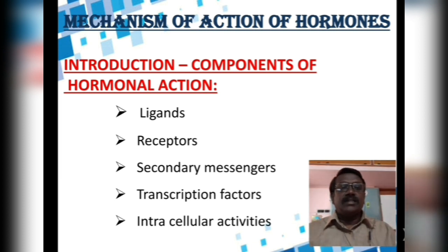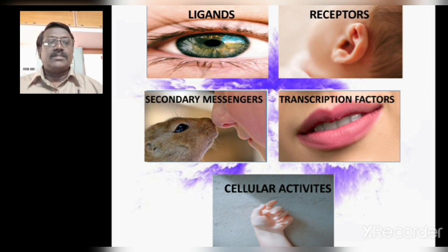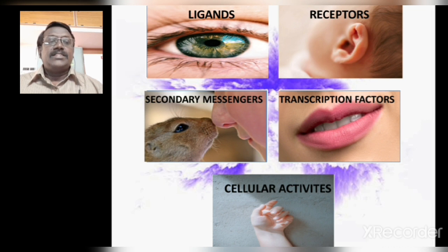The ligands are nothing but the molecules or the hormones. The secreted hormones require receptors to bind on the target cell. Most of the receptors found on the surface of the target cells accept all kinds of hormones, but some are very specific to a particular type of hormone only. These specific receptors are called ligands, and they have a specific affinity towards a specific type of hormone and never accept other kinds of hormones.